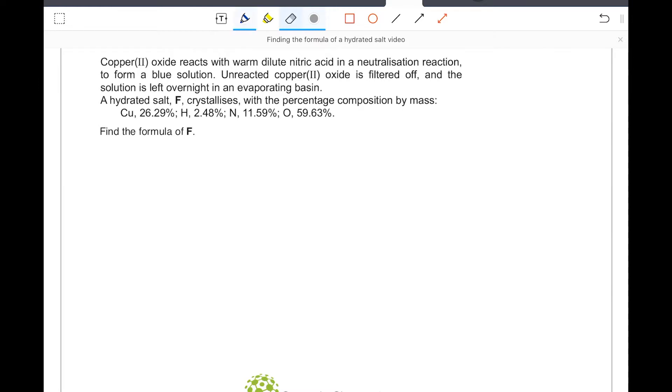What is the formula of this hydrated salt? Well, the first thing to appreciate is that we've been given the information in percentages. This is not a problem, we just assume that we're working with 100 grams of our compound. Because if 26.29 percent of 100 grams is copper, that would be 26.29 grams, so I can go straight ahead and find the number of moles of each element.